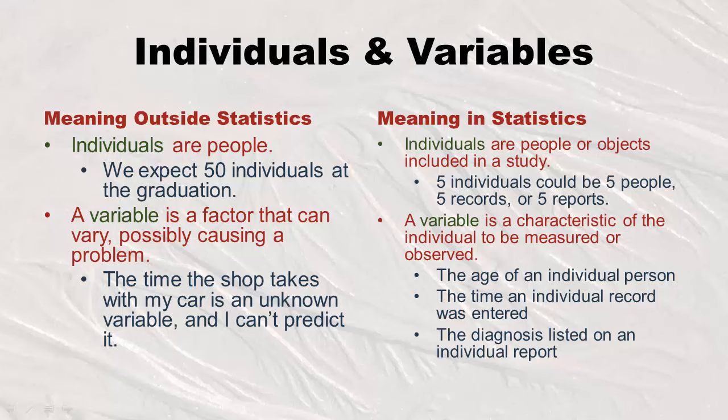We do a lot of different things in healthcare — sometimes we study hospitals, like the rate of nosocomial infections, in which case the hospitals would be the individuals. Sometimes we look at states' rates of infant mortality, in which case states would be the individuals. A variable then is a characteristic of the individual to be measured or observed. One of the things we do in statistics is decide who are our individuals, and what variables are we going to measure.